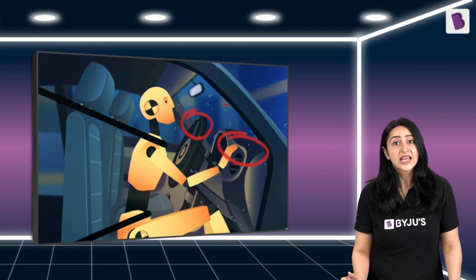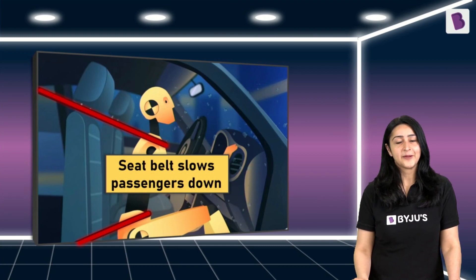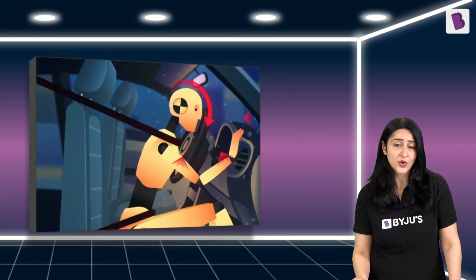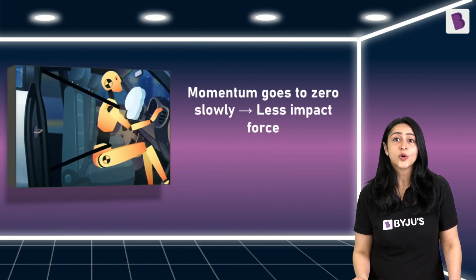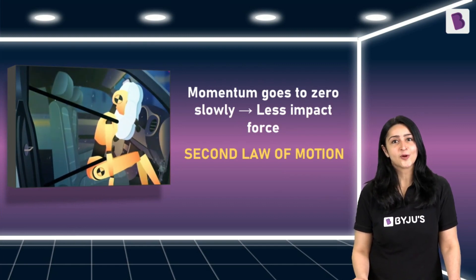During an accident, when the car suddenly stops, inertia may cause the passengers to hit the steering wheel or the dashboard, or they might even fall out of the car. This is where the seatbelt comes in — its job is to slow the passengers down and protect them from harm. But the head can still hit the dashboard and cause injury. This is where airbags come in; they act like a cushion to reduce the impact. With an airbag, the momentum of the passenger goes to zero slowly, and as per Newton's second law of motion, this reduces the force of impact.